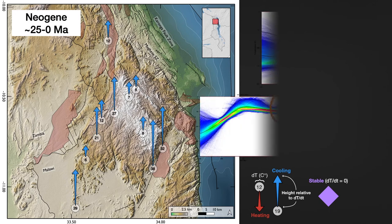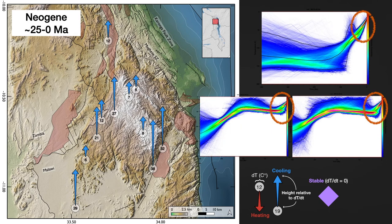Finally, in the Neogene, there's widespread cooling both on and off the plateau, and this is likely due to the reactivation of weakened fabrics and regional uplift associated with the Malawi Rift in the nearby area.